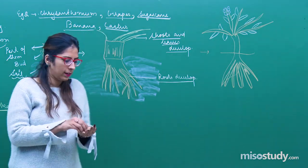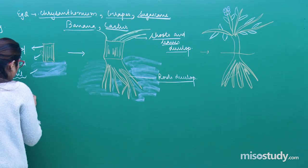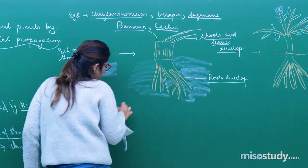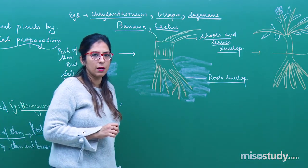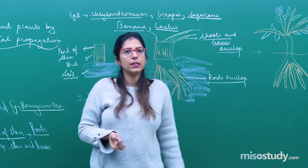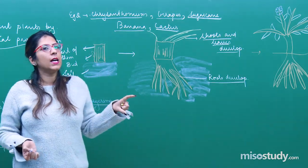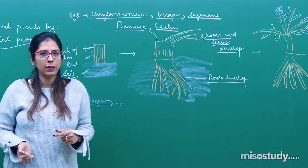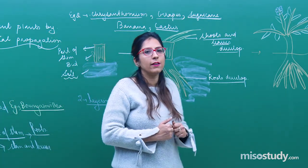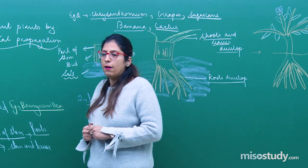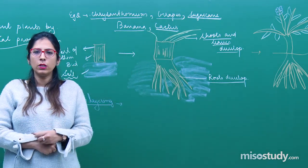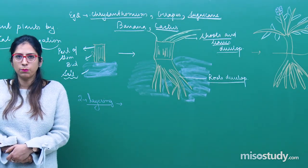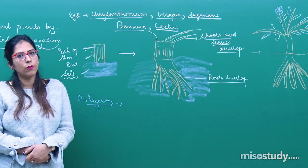The second method is layering. In layering, we take a stem that is already attached to the parent plant. That part of the stem is allowed to bend so that it can embed itself into nearby soil. From that area, there will be formation of roots and shoots. The original connection to the parent plant is then broken down, forming an individual plant.